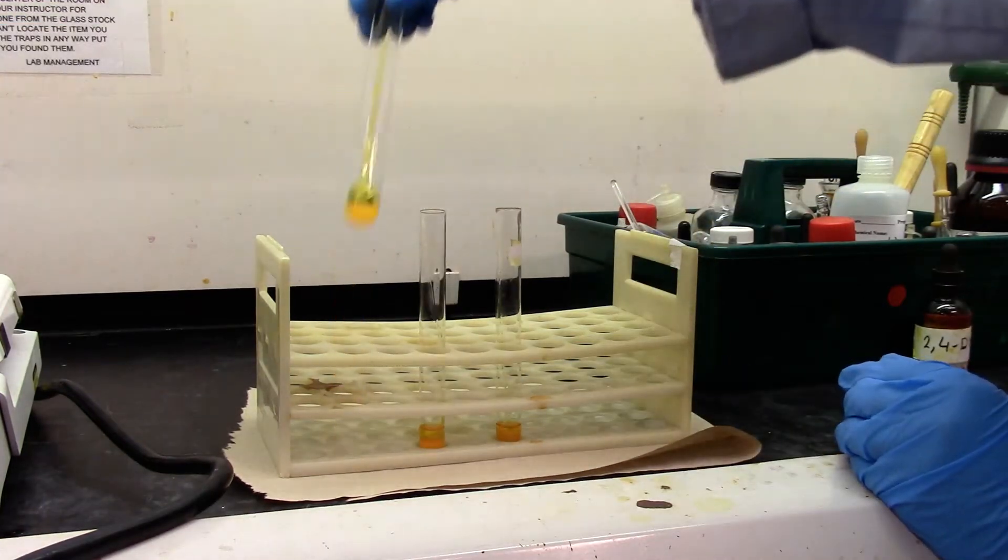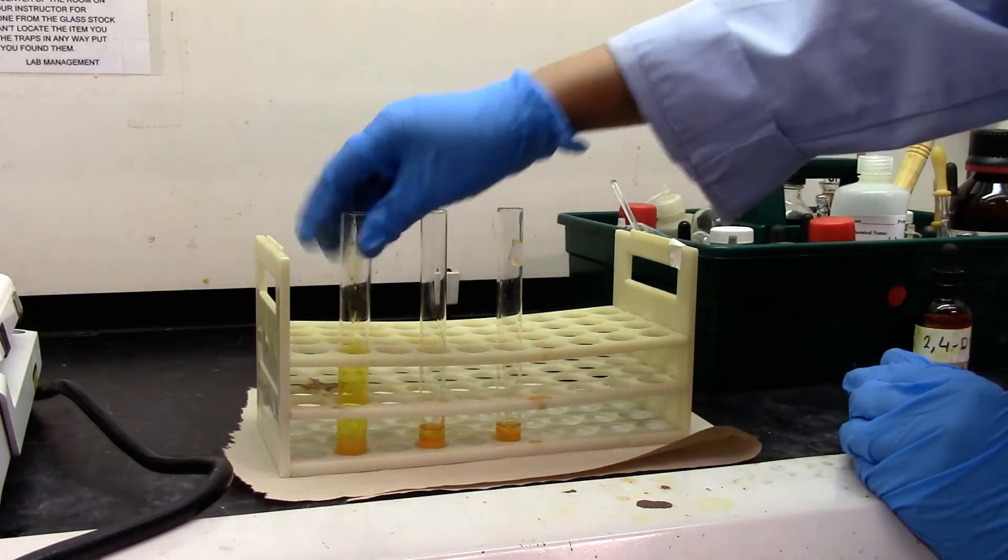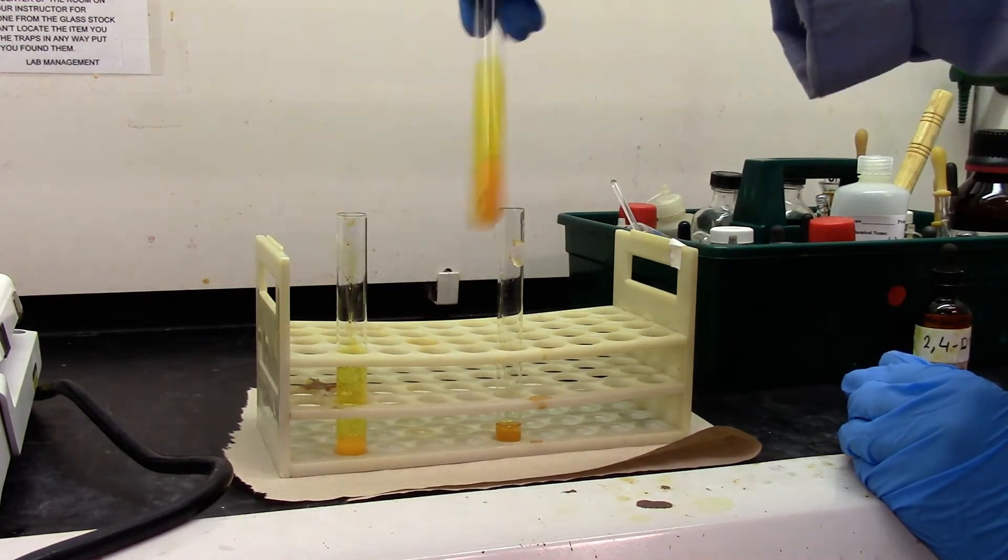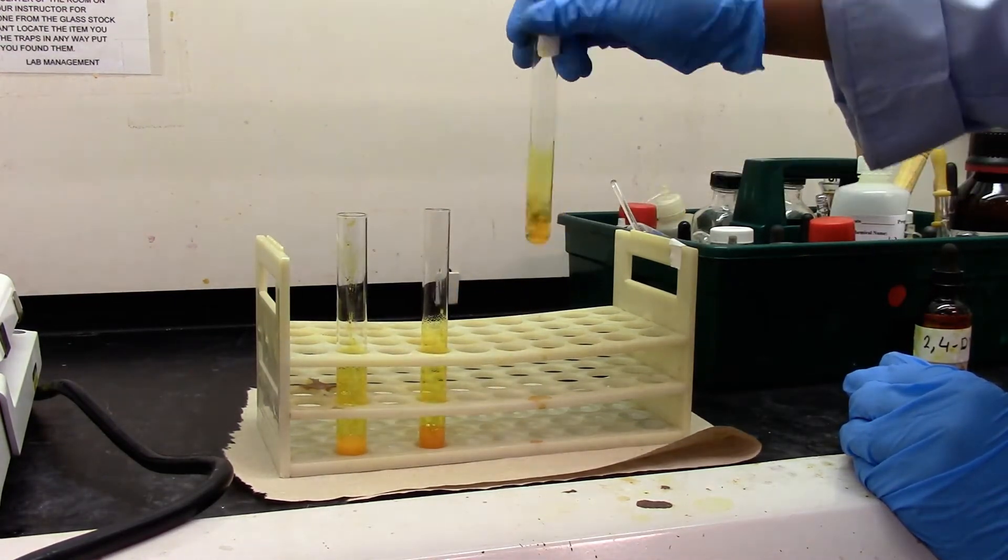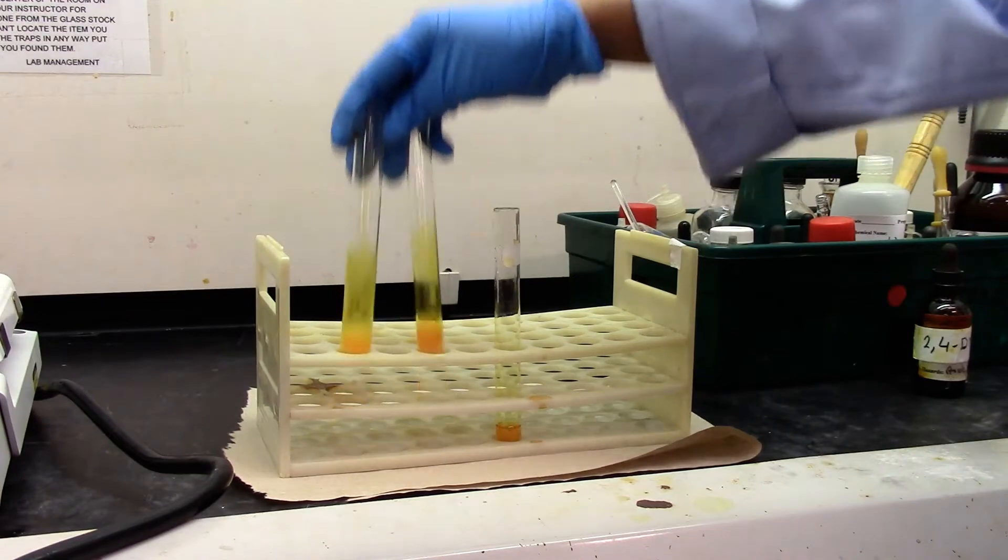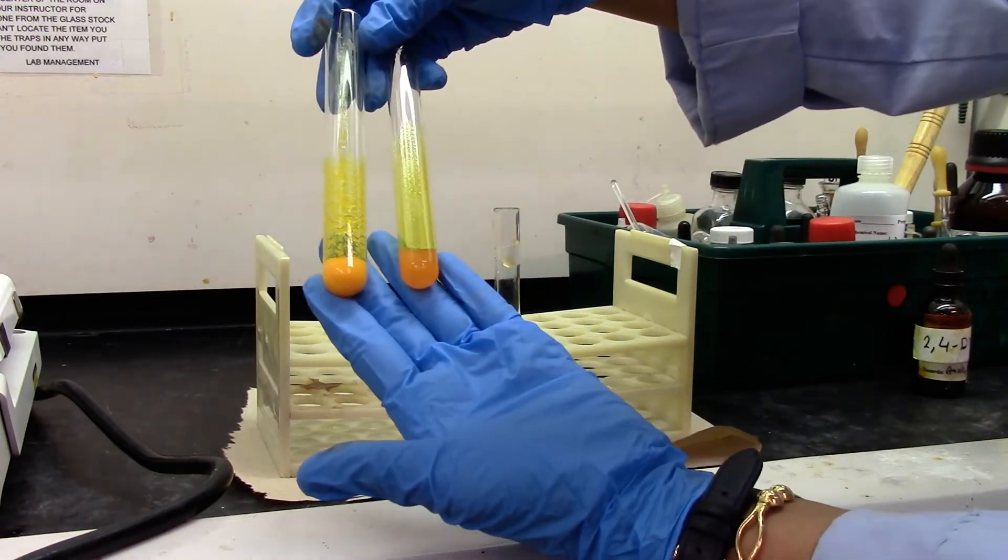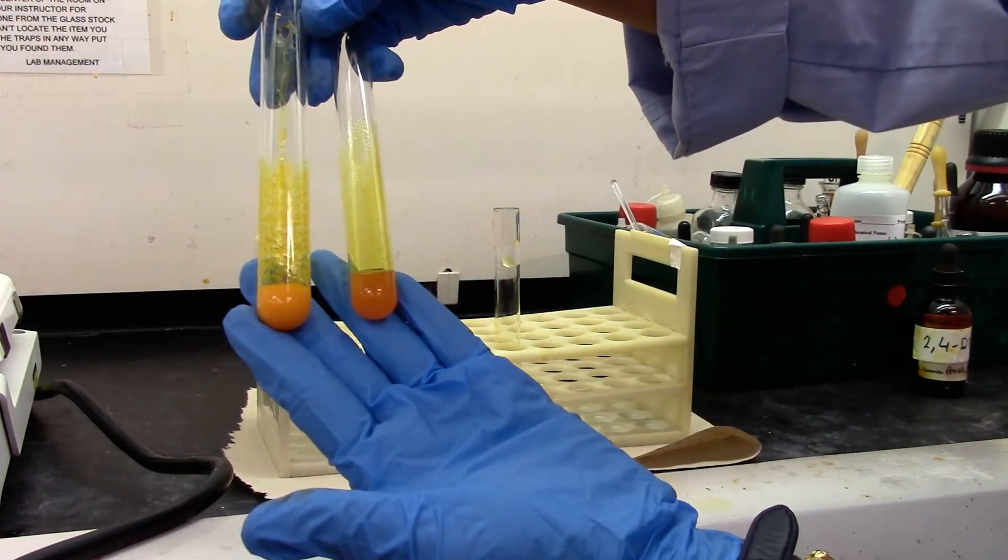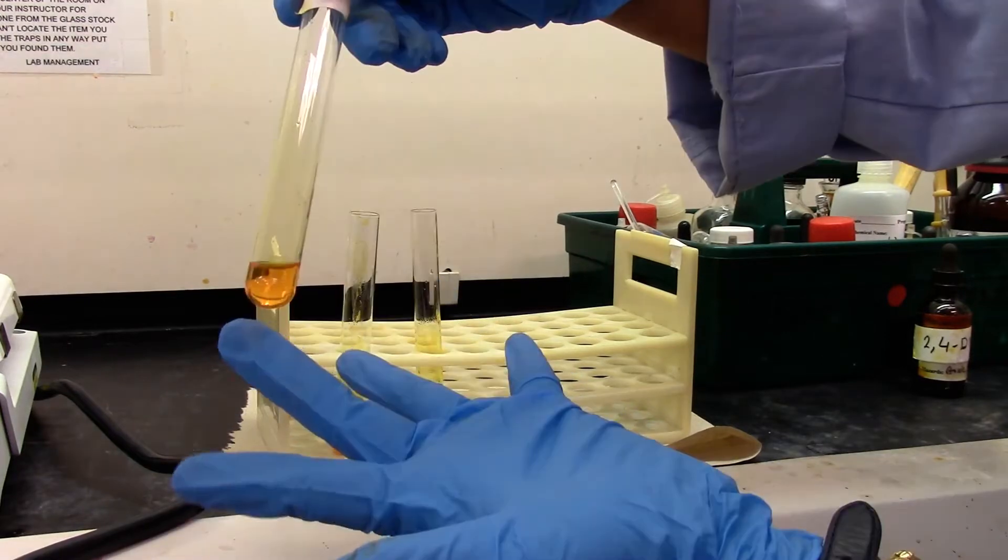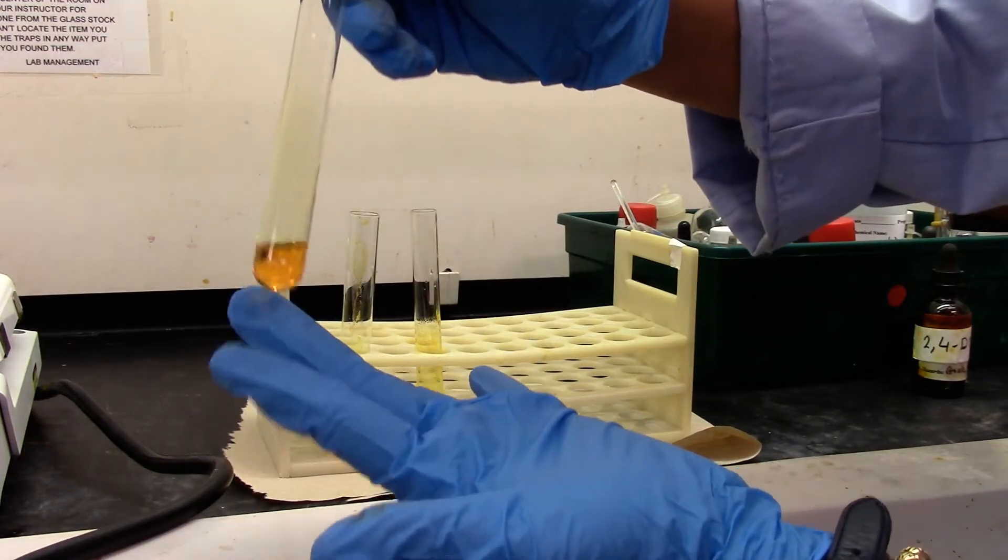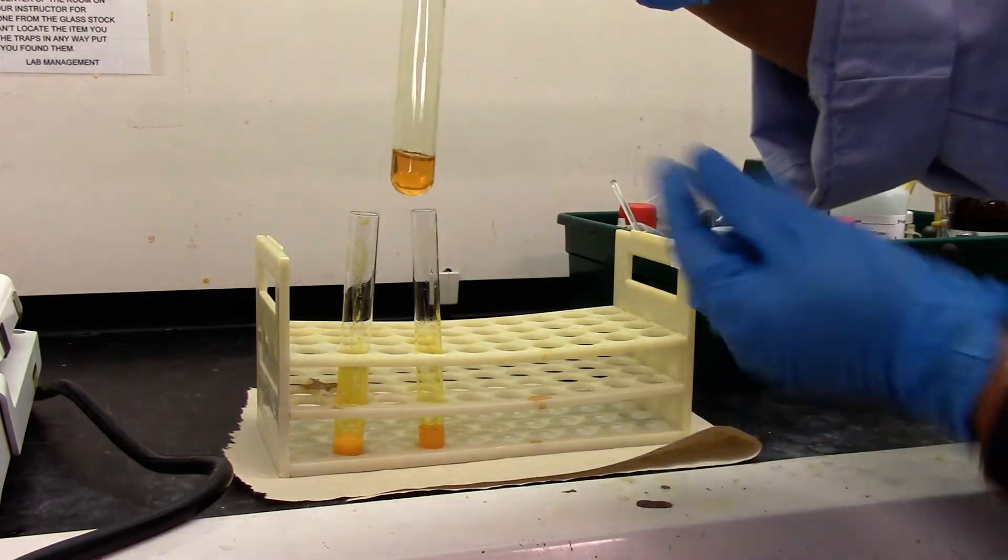My aldehyde and ketone both produce yellow precipitate. Negative test with an alcohol is just a yellow coloration, no precipitate.